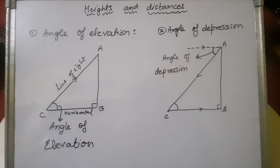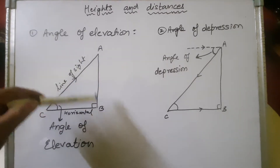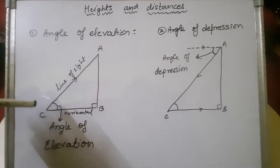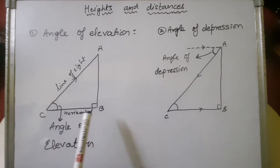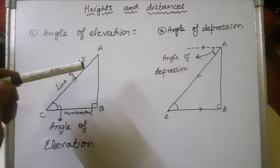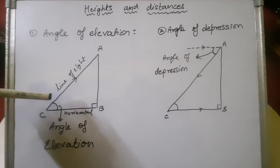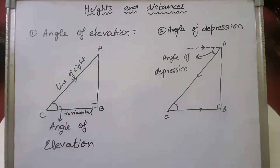What is angle of elevation? Suppose there is a tower AB, where A is the top of the tower and B is the foot. There is a person standing at C. The line of sight goes from C to A. The distance from person C to the foot of the tower is CB, and AB is the height of the tower. The angle between the horizontal line and the line of sight is called the angle of elevation.